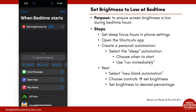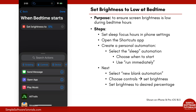Tap on Set Brightness. It wants us to tell it what brightness we want — zero through 100. We can select this and drop it down to maybe 5% brightness, then tap Done when you're done.